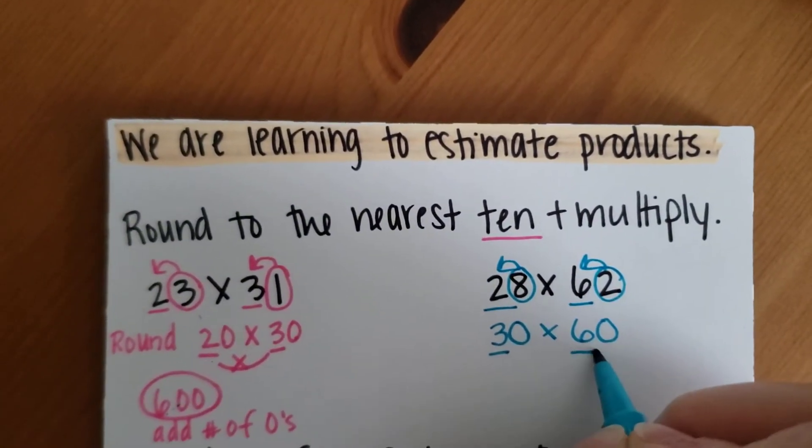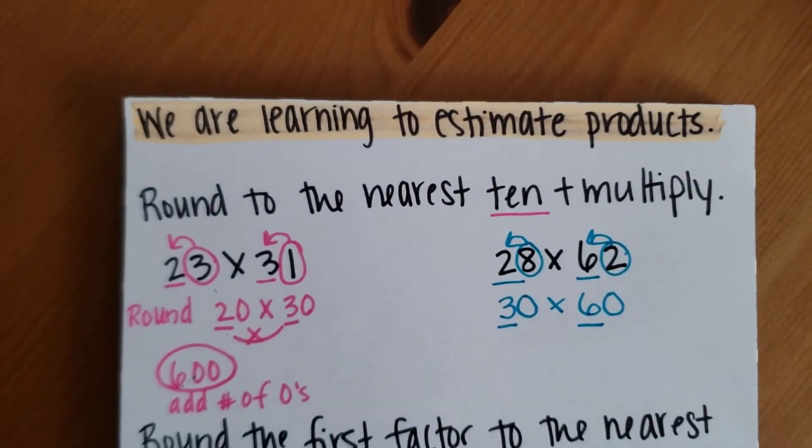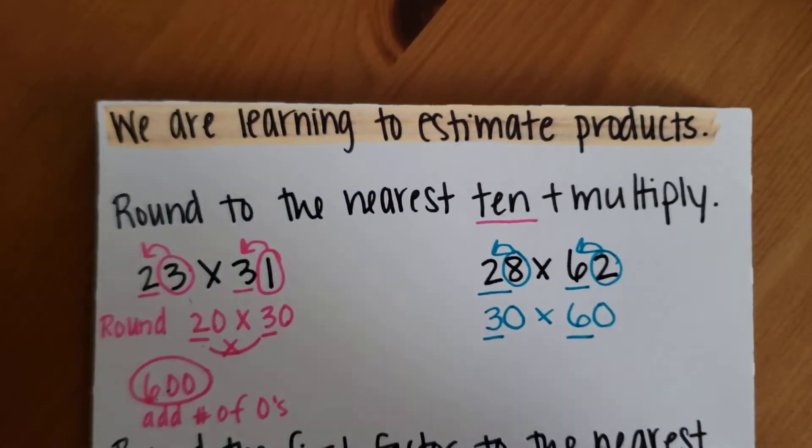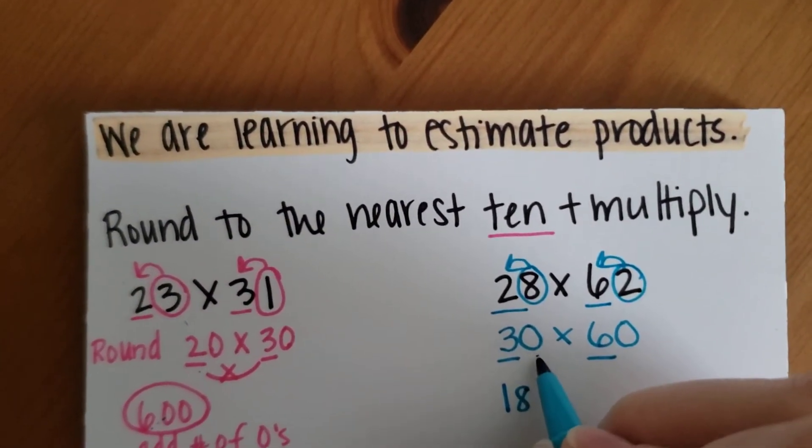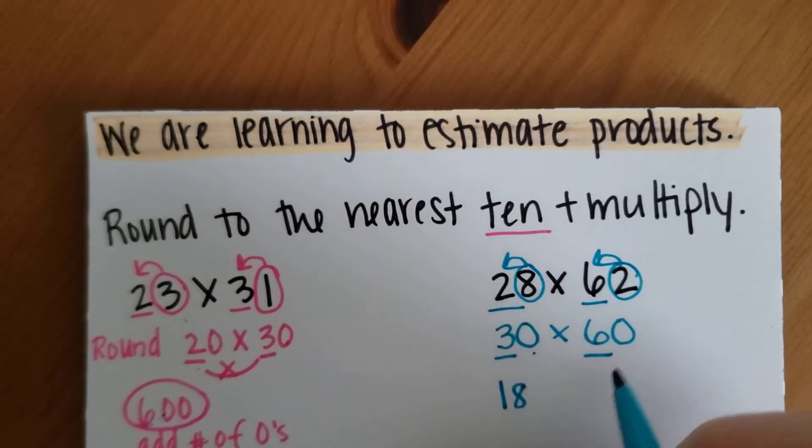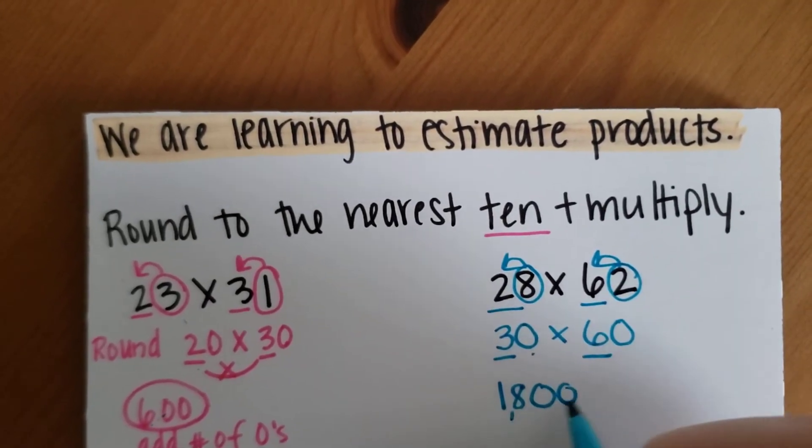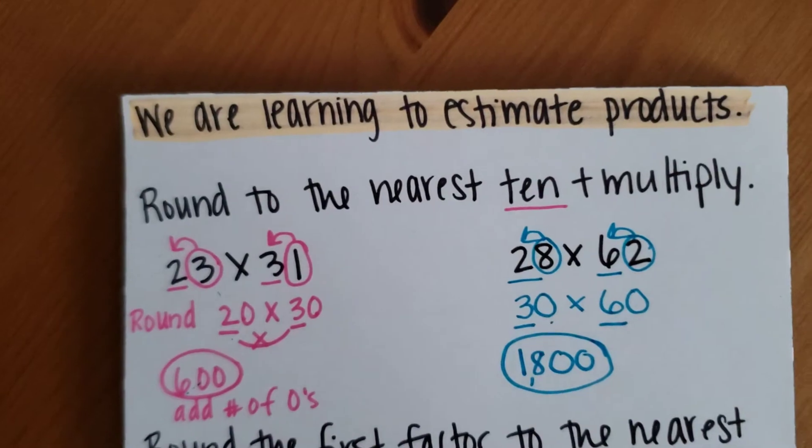So then I underline and multiply my numbers in my 10 spot. So 3 times 6 equals 18. And then I add how many zeros there are in there. 1, 2 zeros. So I add 2 zeros. So that is my answer.